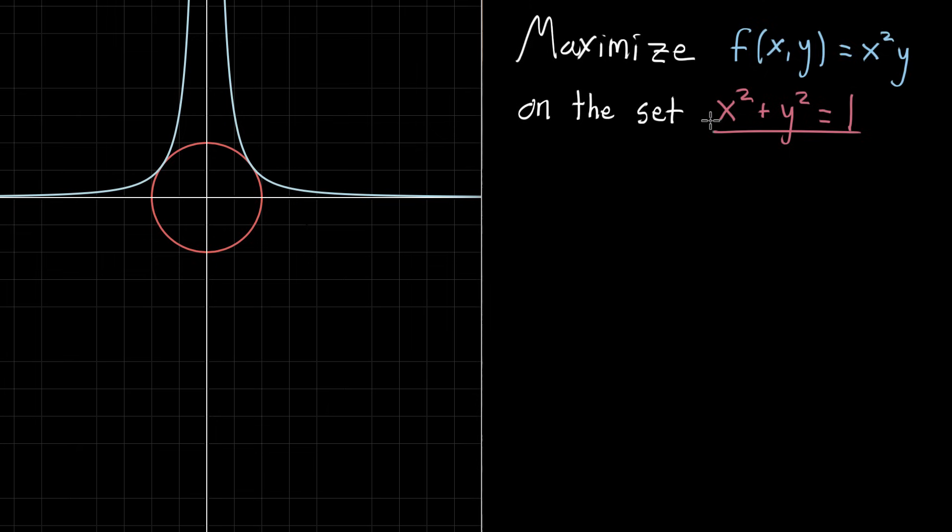In the last video I introduced a constrained optimization problem where we were trying to maximize this function f equals x squared times y but subject to a constraint that your values of x and y have to satisfy x squared plus y squared equals 1.